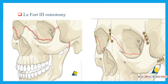Then the LeFort III osteotomy — also most commonly used to treat the mid-facial area, mid-facial hypoplasia or mid-facial deformity — including the inferior border of the orbit and also the zygomatic bone. As seen in this picture, this is the cutting from the zygomatic bone, inferior border of the orbit, and ethmoid bone. This is the LeFort III osteotomy for those patients with severe mid-facial hypoplasia or deformity, then fixation by mini plate and screw.